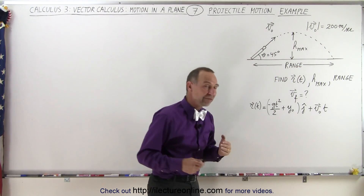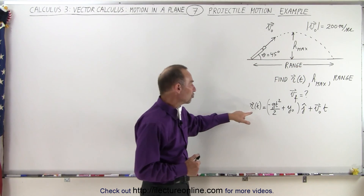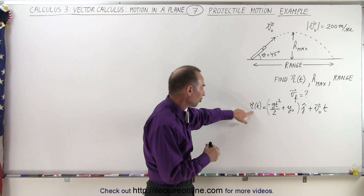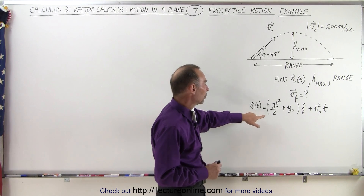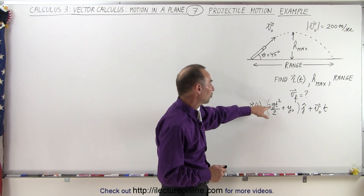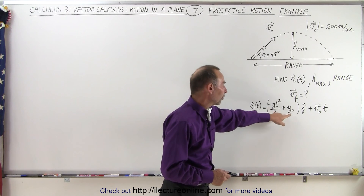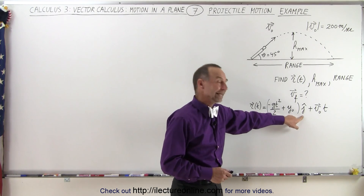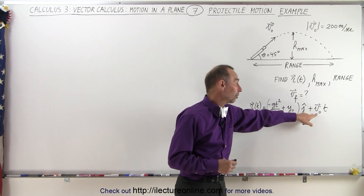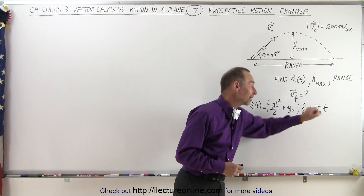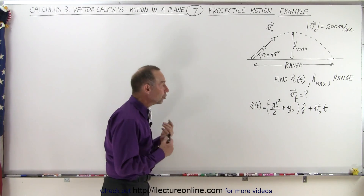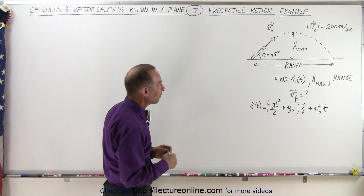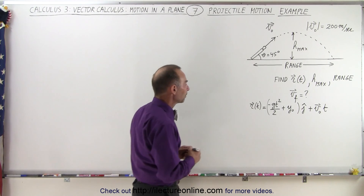From the previous video, the general equation for position as a function of time is equal to minus gt-squared over 2 plus the initial position in the y direction, plus the initial velocity times t. Using that equation based upon what we're given here, let's see what we can come up with.